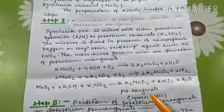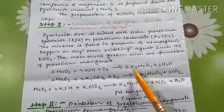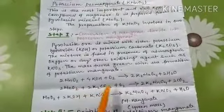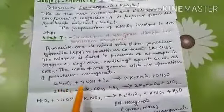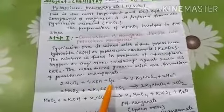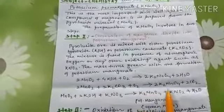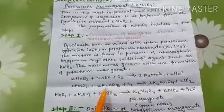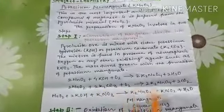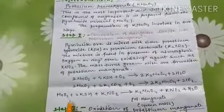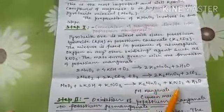In three ways we can prepare potassium manganate. The formula for potassium manganate is K₂MnO₄. MnO₂ is the pyrolusite ore. In the first reaction, MnO₂ is fused with potassium hydroxide in atmospheric oxygen. In the second reaction, pyrolusite ore is fused with potassium carbonate in the presence of atmospheric oxygen, then potassium manganate and carbon dioxide are formed. When pyrolusite ore is fused with potassium hydroxide and potassium nitrate, then potassium manganate is formed along with KNO₂ and H₂O.